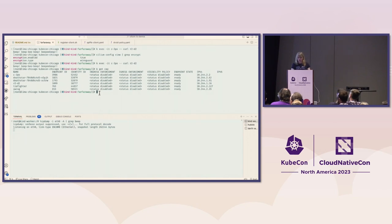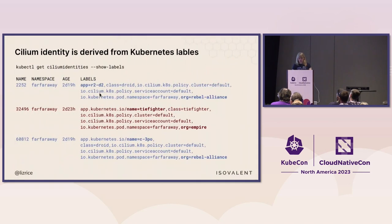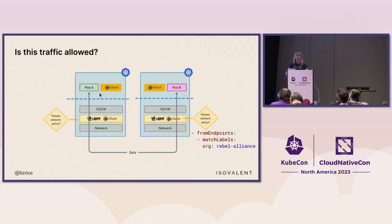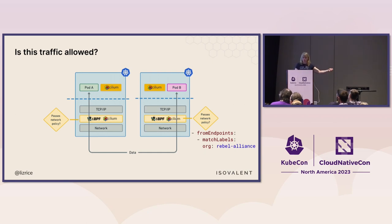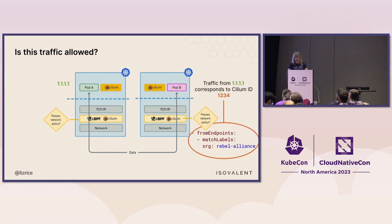That Cilium identity is derived from labels, and when making a network policy decision, it uses that identity value to check whether traffic from a certain pod with a certain security identity matches the labels required by the policy — to determine whether the traffic is allowed or not. Traffic from a certain IP address has a certain security identity, which either passes or fails the policy.